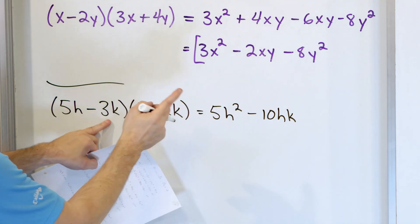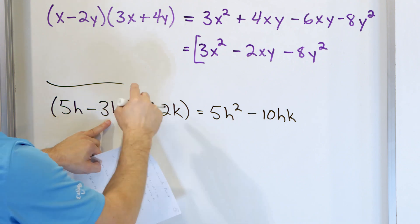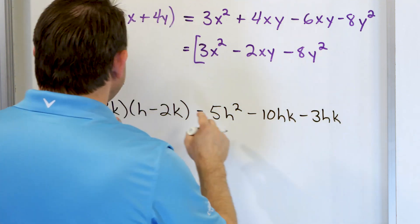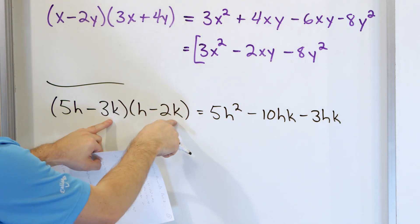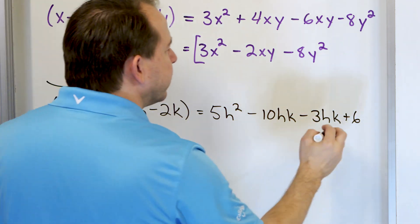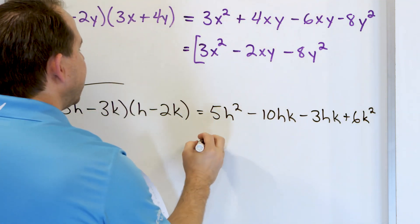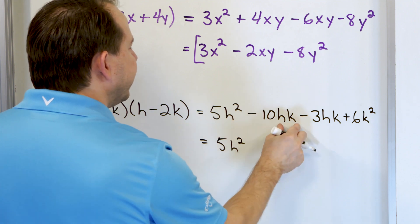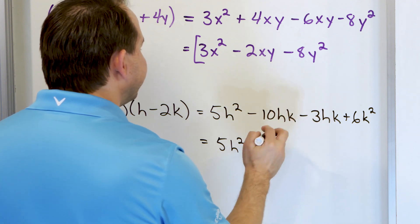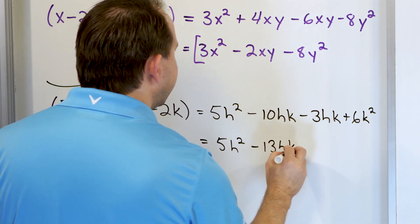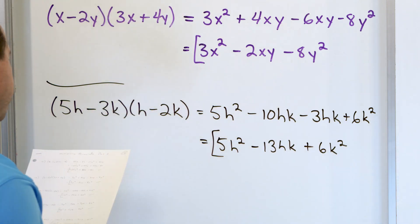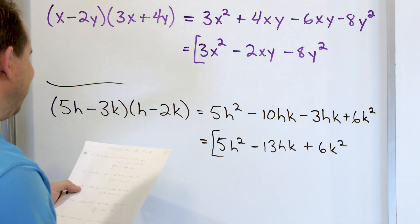Then distributing negative 3k: negative 3 times 1 gives negative 3hk. And negative 3 times negative 2 is positive 6, giving 6k squared. Combining like terms: negative 10 minus 3 is negative 13hk. So the final answer is 5h squared minus 13hk plus 6k squared.